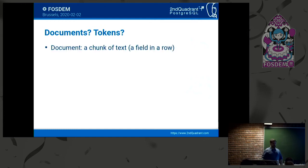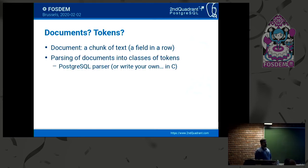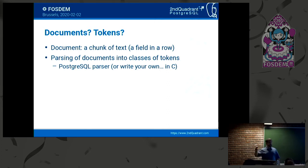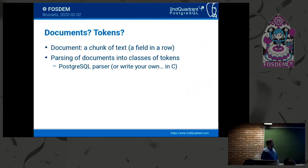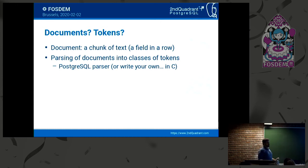Precision is how accurate your search results are — how many false positives or false negatives you're getting. Recall is how many results you're getting back and how restrictive your query is. These are influenced by stop words and stemming. A document is a chunk of text — a field in a row in a table. Parsing documents into classes of tokens is what needs to be done next. Tokens can be strings, alphanumeric strings, numbers, or any character group you define. We're fortunate to have a very good parser that comes for free with Postgres, or you can write your own in C.